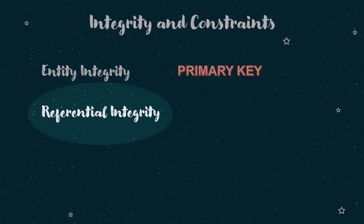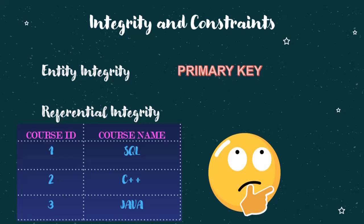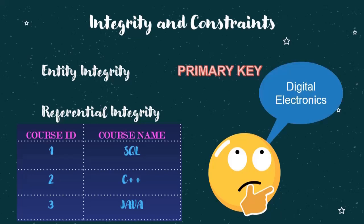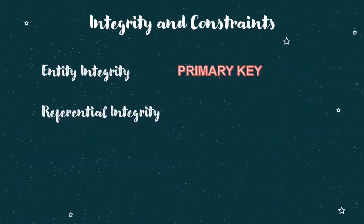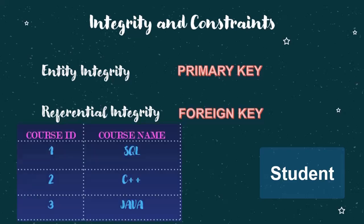Next is Referential Integrity. Referential Integrity means that the values in a column of one table should correspond to values that exist in another table. For example, if a course table has courses SQL, Java, and C++, then a student should only be able to select from those three courses. This restriction is enforced through a Foreign Key. A Foreign Key ensures that data in a column will only come from values that are the primary key in the referenced table.